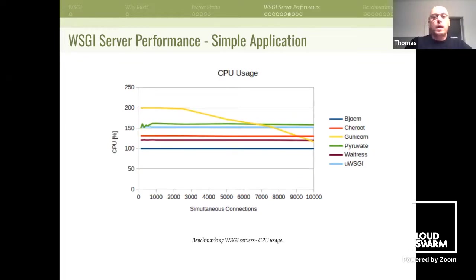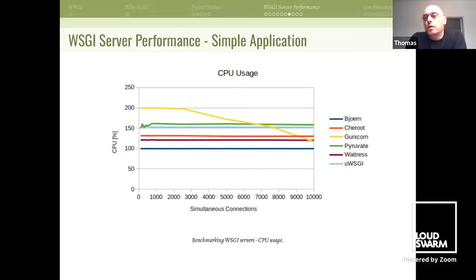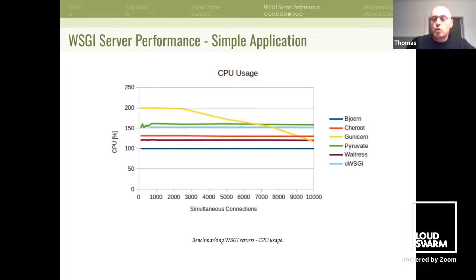Looking at CPU usage, we can see Bjorn is at exactly 100% because it's a single-threaded server, and the other servers can use a bit more CPU. There's Gunicorn, which at higher loads cannot use more CPU and its usage goes down — but using more CPU is not bad here because it shows multithreaded servers can make use of more than one CPU core. Most servers have two threads except Gunicorn, which follows its documentation recommending five threads for two CPU cores, but as you can see from the chart, that may not be a very good idea.